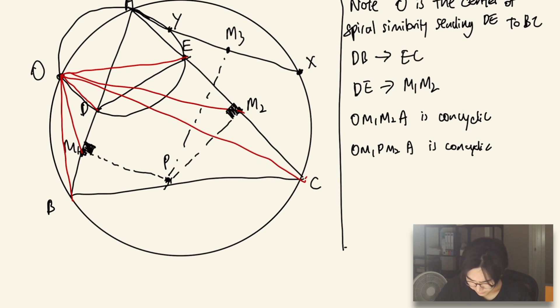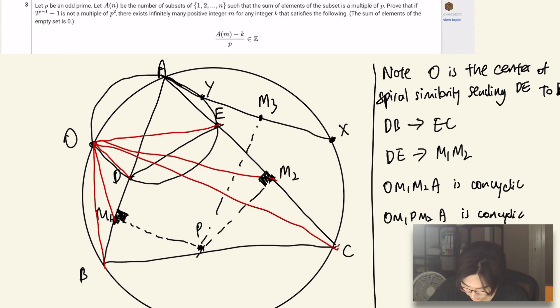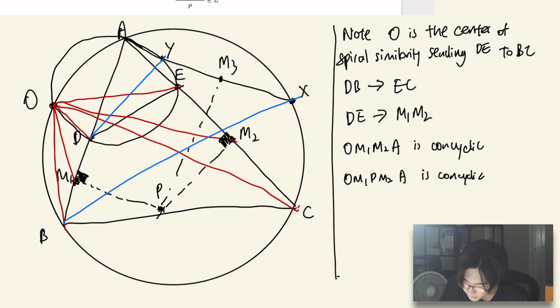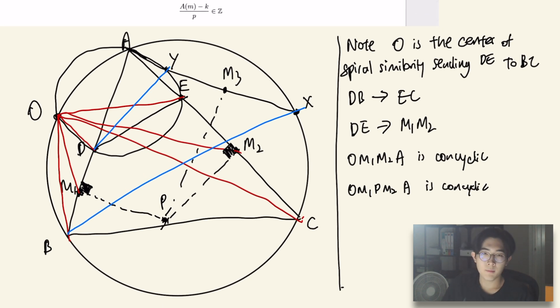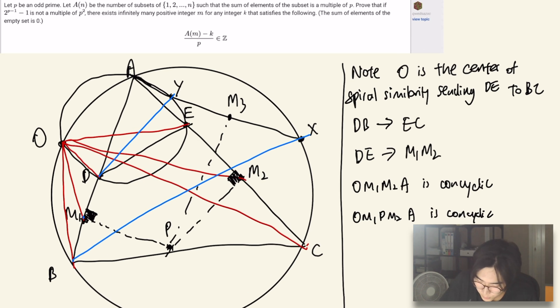Now, we notice that O is also the spiral center sending DY to BX. Then by a similar argument, it means that O is also the spiral center sending DY to M1M3, which are the respective midpoints of DB and YX.